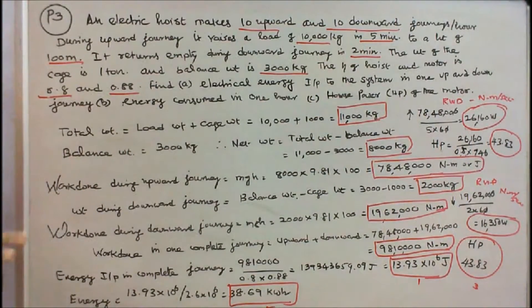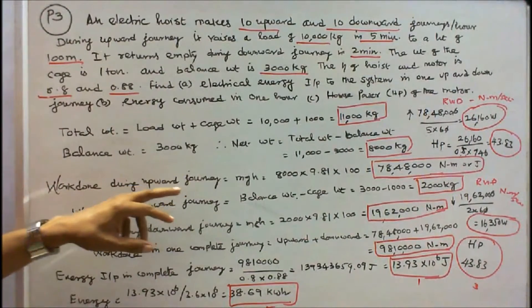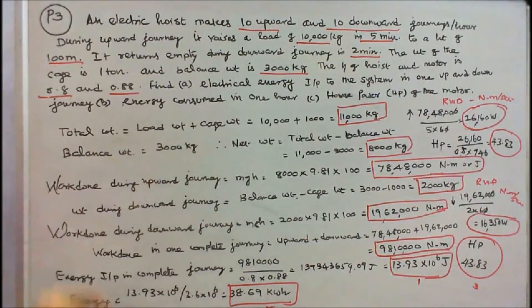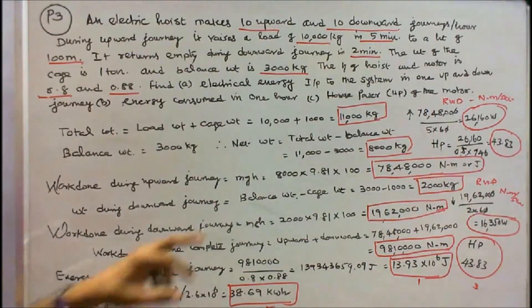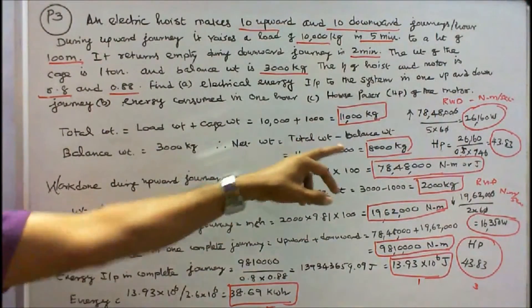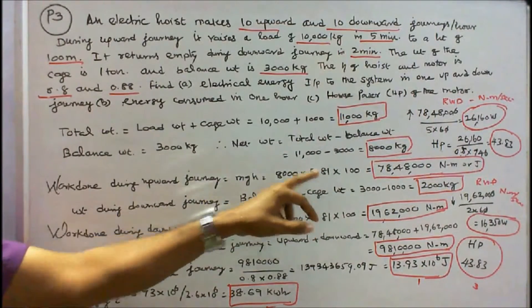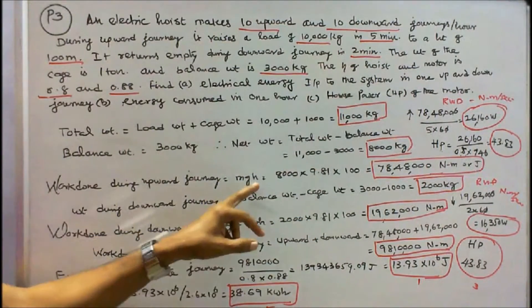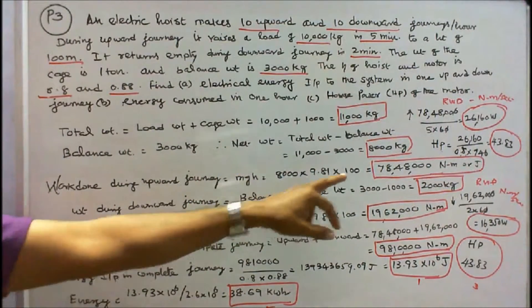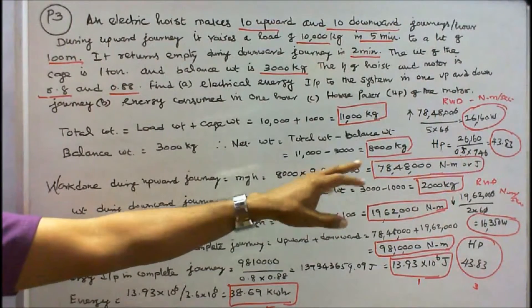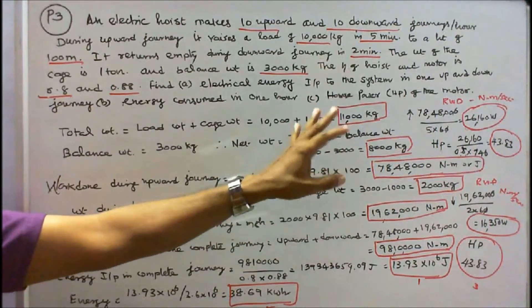Work done during upward journey is equal to M into G into H. Here M is 8,000, G is 9.81, H is 100, that is equal to 78,48,000 Nm.